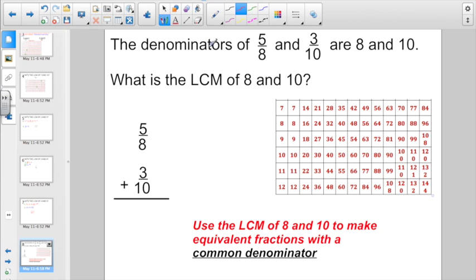Check out this one. The denominators of 5/8 and 3/10 are 8 and 10. Again, they were asking, what is the least common multiple of 8 and 10? So again, think about your multiples of 8, think about your multiples of 10, and you can see right here that the least common multiple of 8 and 10 would be 40. And I'm going to jumpstart you right now, the reason why least common multiple is so important, because we can now use the least common multiple of 8 and 10 to make equivalent fractions with the common denominator.